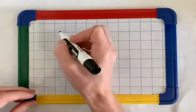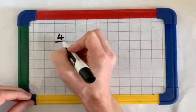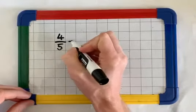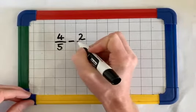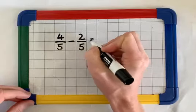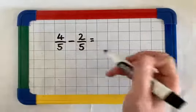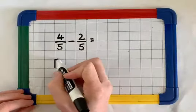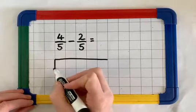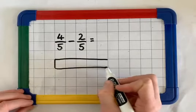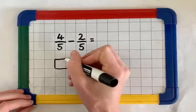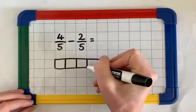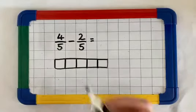If we're looking to subtract, we have 4 fifths, and we look to take away 2 fifths. Of course, I can draw this out again using a diagram, using bars. We've got our whole like this, and we split it into 1, 2, 3, 4, 5 equal parts.